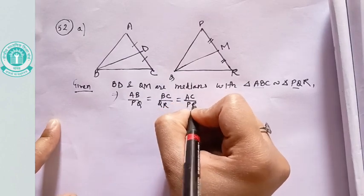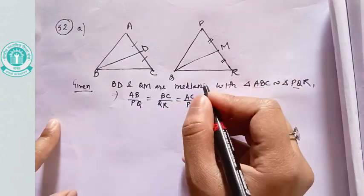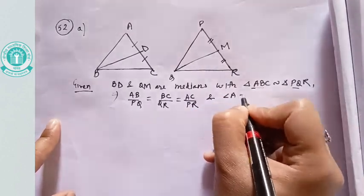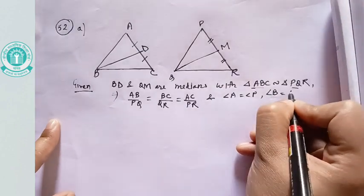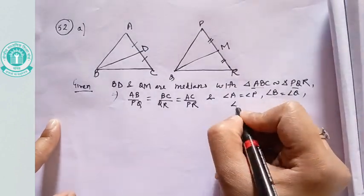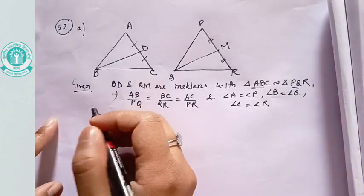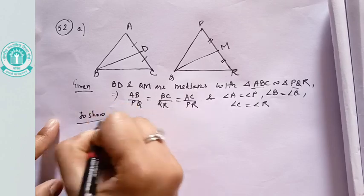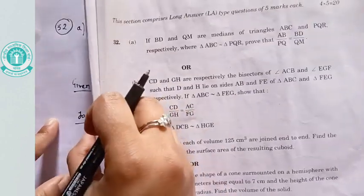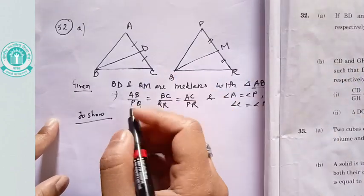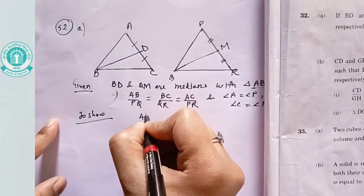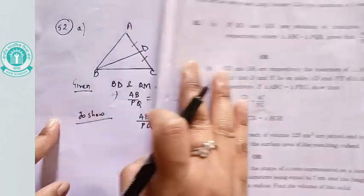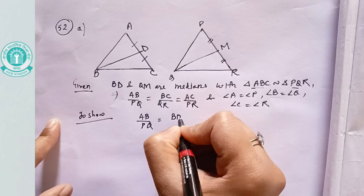Remember, whenever triangles are similar, their corresponding sides have the same ratio and their corresponding angles are equal. We are done with the given part. Now we need to show the relation: AB/PQ equals BD/QM.